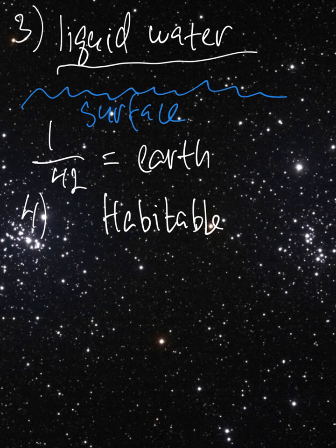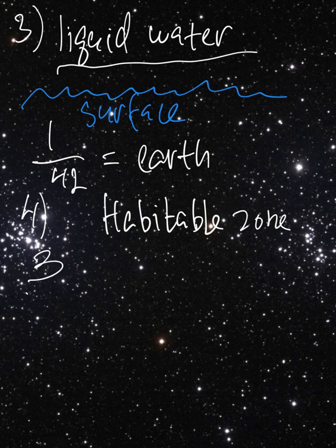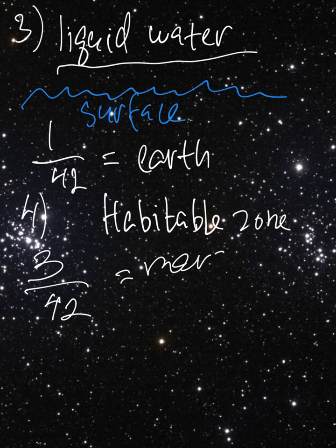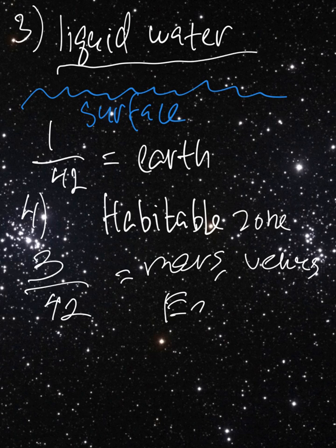Number four is the location in the solar system. We're talking about the habitable zone or Goldilocks zone. It's not just Earth, actually. It is three different objects. There is three out of 42 planets or objects that are in the zone. They are, of course, Mars, Venus and Earth. All three are in the so-called Goldilocks zone. So the chance of having a planet in that region out of all objects that we can possibly settle on is about three out of 42.